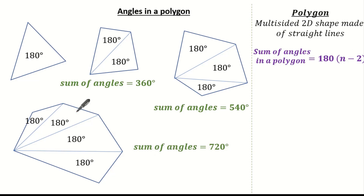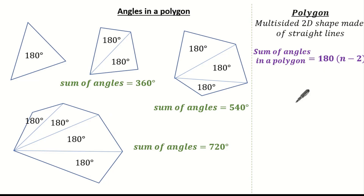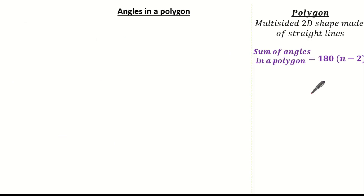For example, looking at our hexagon — this is made of 6 sides. So 6 subtract 2 is 4, and 4 times 180 gives 720. So this is a quick and easy way to work out the sum of angles in any polygon.